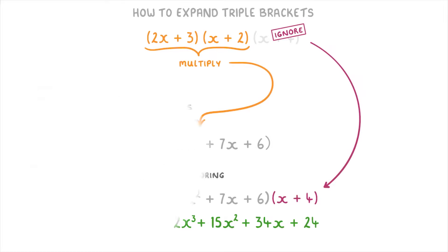Let's now have a look at how to do all this stuff a bit more closely. As we said, we ignore the last bracket initially and just focus on multiplying the first two brackets together. So multiply the 2x by the x and the 2, and multiply the 3 by the x and the 2.